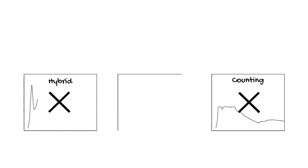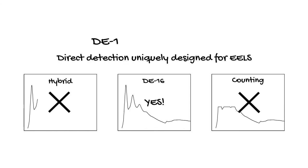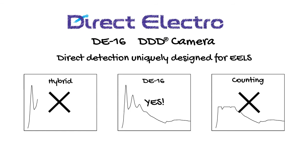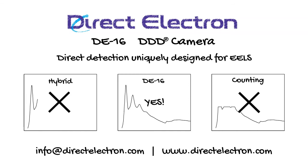We believe we hit the sweet spot with the DE-16. It's large, it has exceptional signal-to-noise ratio and resolution, and it has sufficient dynamic range. Finally, a direct detector that is designed for EELS. For more information, please see our website. Better yet, send us an email and start a conversation. I think you'll be pleasantly surprised by what we have to offer. Plus, we love hearing from you because it helps us continue to develop future innovations to help propel your scientific discoveries. Thank you.